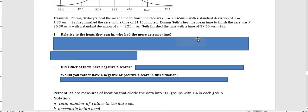Seth finished the race with a time of 27.6 minutes. They were running with different groups of people, so there was a different mean and there was a different standard deviation for their races.